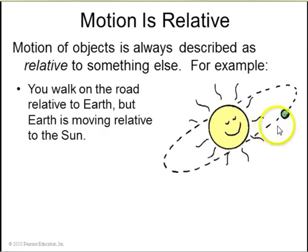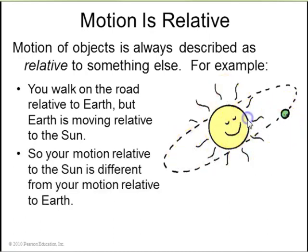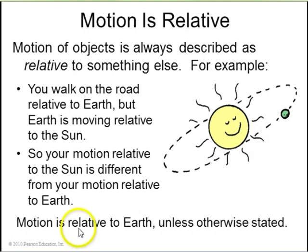Here's the Sun, here's the Earth. You walk on a road relative to the Earth, so you have some speed relative to the Earth, but the Earth is moving relative to the Sun. So your motion relative to the Sun is different than your motion relative to the Earth. In this course, all the motion will be relative to the Earth unless otherwise stated.